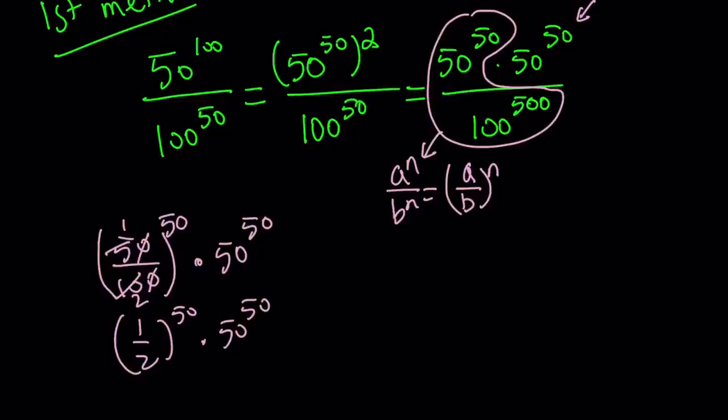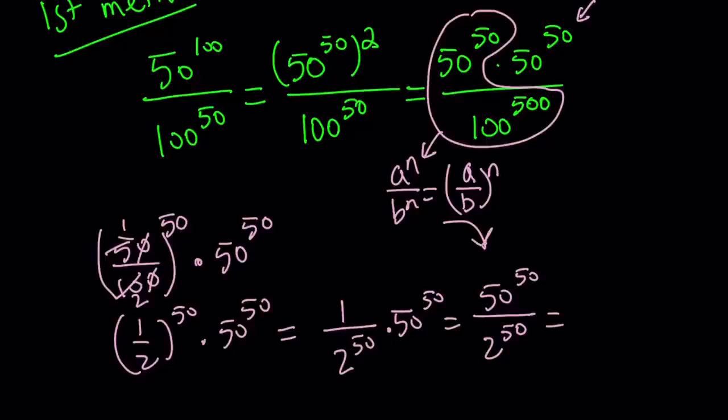And guess what? They can be multiplied. How? Well, you can first write this first one as 1 over 2 to the power 50 times 50 to the power 50. And then this is 50 to the power 50 divided by 2 to the power 50. At this point, we're going to use the same rule, this time with a different basis. And it's going to be 50 over 2 to the power 50, which is 25 to the power 50. And guess what? That's the answer.